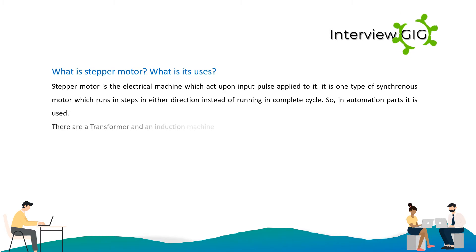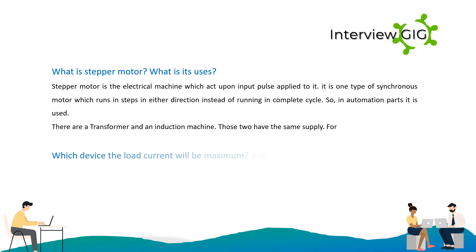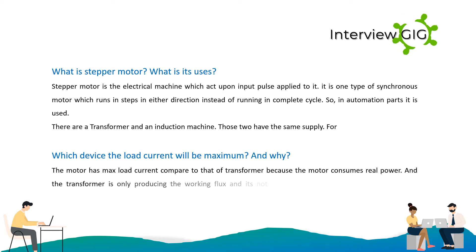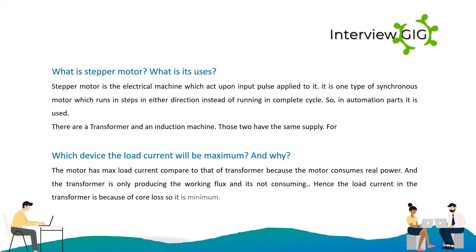There is a transformer and an induction machine on the same supply — which device will have maximum load current and why? The motor has maximum load current compared to that of the transformer because the motor consumes real power. The transformer is only producing the working flux and is not consuming power. Hence, the load current in the transformer is due to core loss only, so it is minimum.